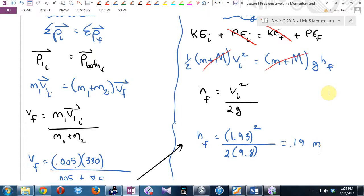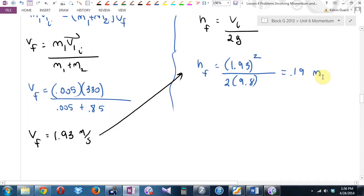If you knew the height, could you figure out the initial velocity that they moved off together at? Yep. If you knew the initial velocity that they moved off together at, could you figure out how fast the bullet was coming in at? Divide by the mass of the bullet. Could be done without fancy equipment, no stopwatch needed, you don't need to have human reaction time. That's why this is called the ballistic pendulum.